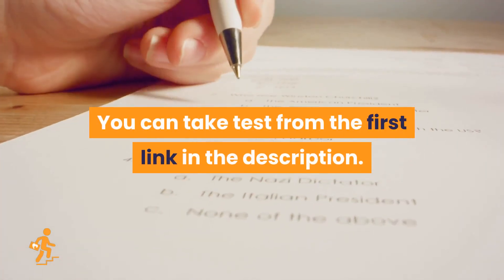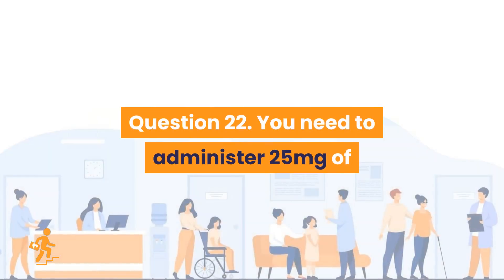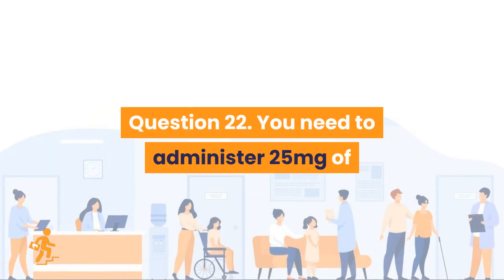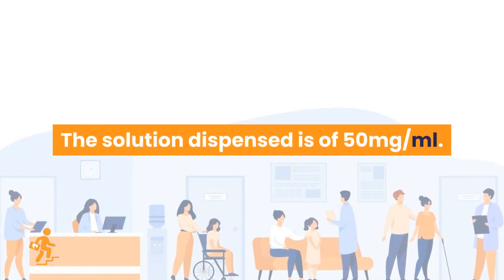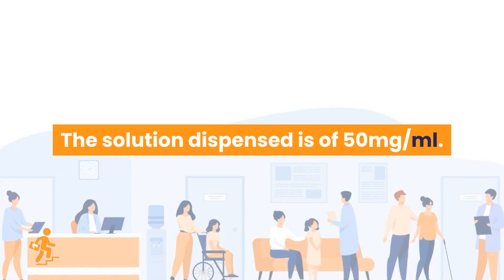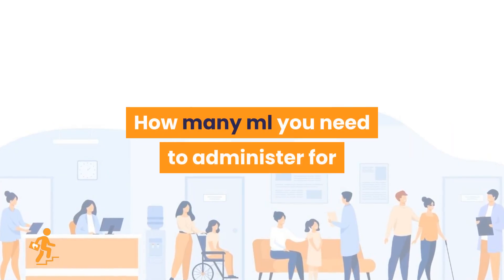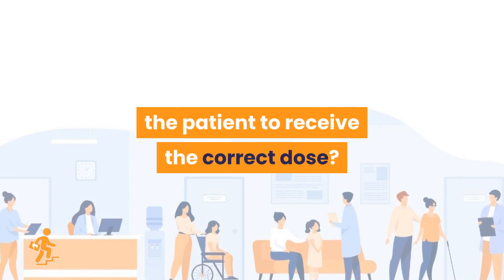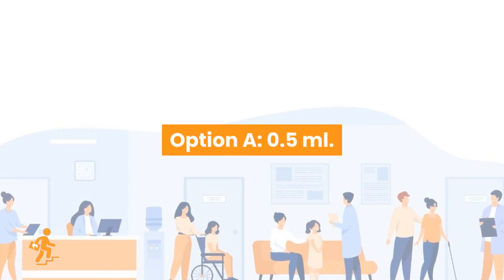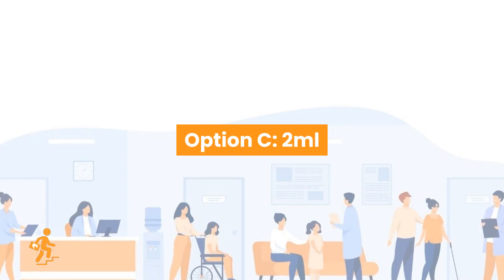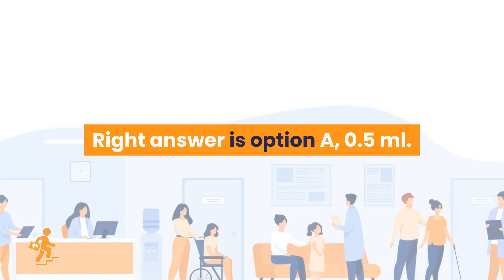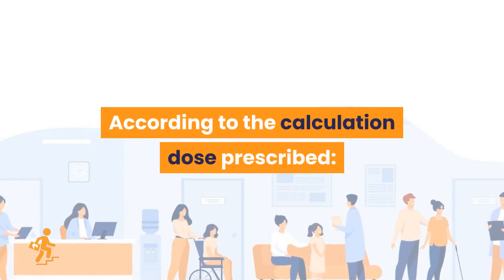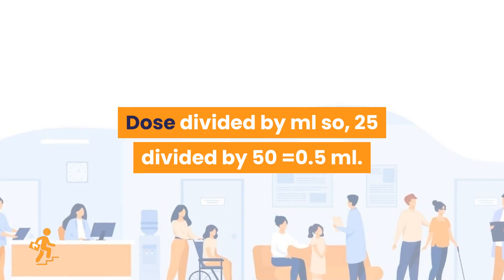Question 22. You need to administer 25 mg of injection prescribed by the doctor to your patient. The solution dispensed is 50 mg per ml. How many ml do you need to administer for the patient to receive the correct dose? Option A: 0.5 ml. Option B: 1 ml. Option C: 2 ml. Option D: 1.5 ml. Right answer is Option A, 0.5 ml. Dose prescribed divided by dose per ml: 25 divided by 50 equals 0.5 ml.